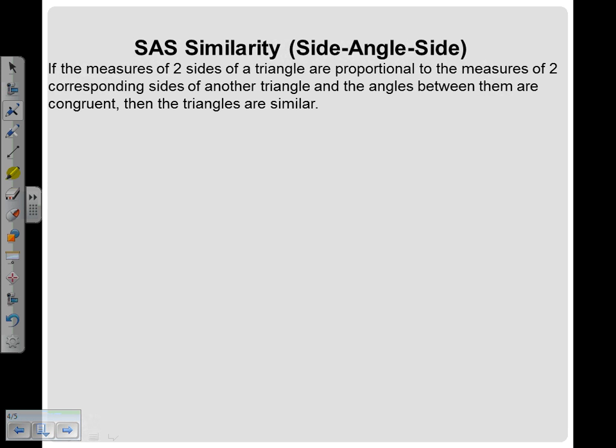Same thing with similarity. Compared to the sides, where does the angle have to be? In the middle. In between. Same thing it used to be. If the measures of two sides of a triangle are proportional to the measures of two corresponding sides of another triangle, and the angles between them are congruent, then the triangles are similar.